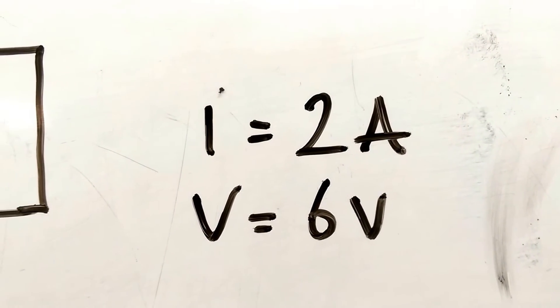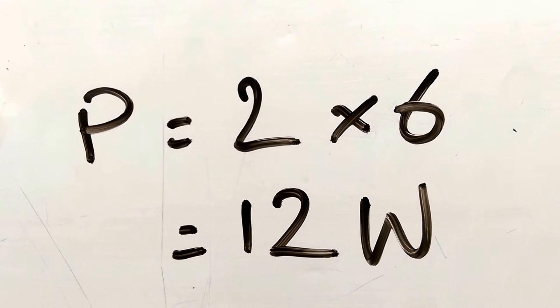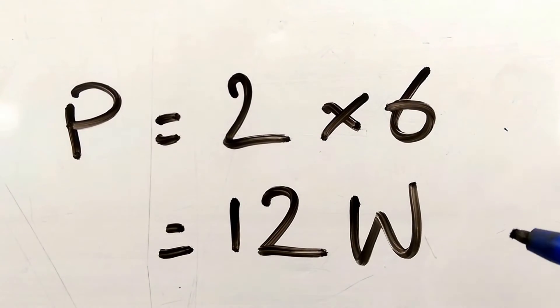Current was 2 amps, and the voltage 6 volts. Now, the power is 2 times 6. It is 12 watts.